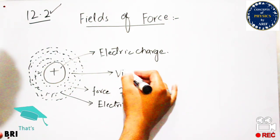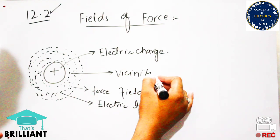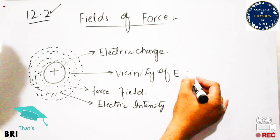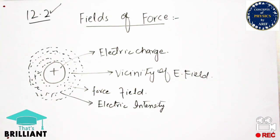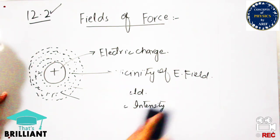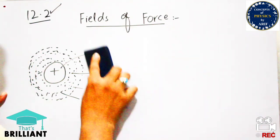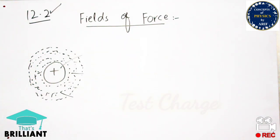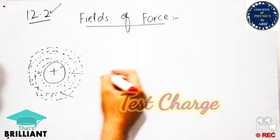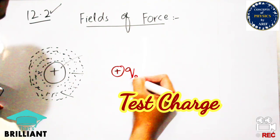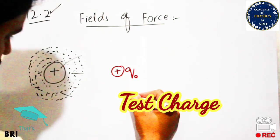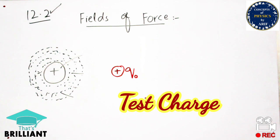In order to understand this concept, we cannot directly see these dots or lines around the electric charge. To understand the electric field, we can feel these lines or this intensity. So we place a unit charge, or point charge, in the vicinity of or close to the source charge.